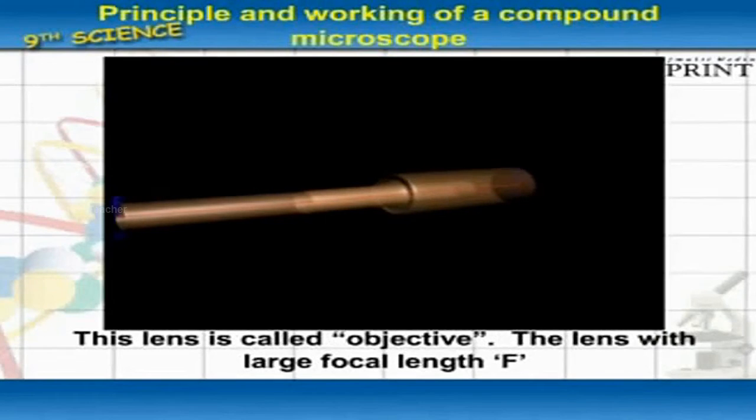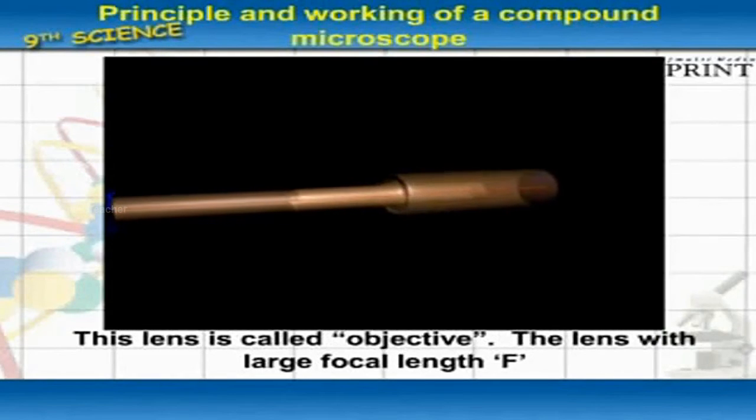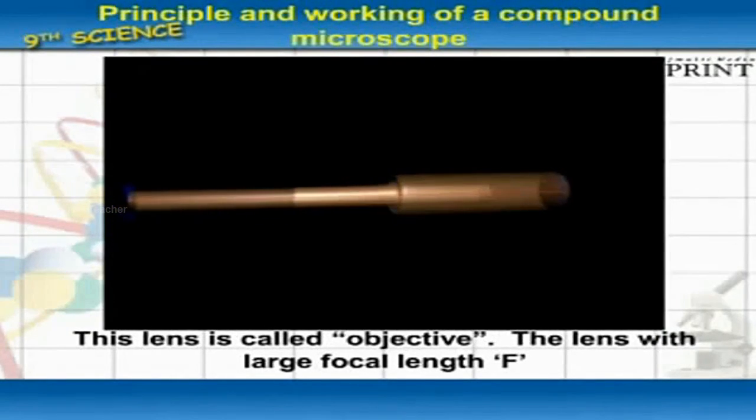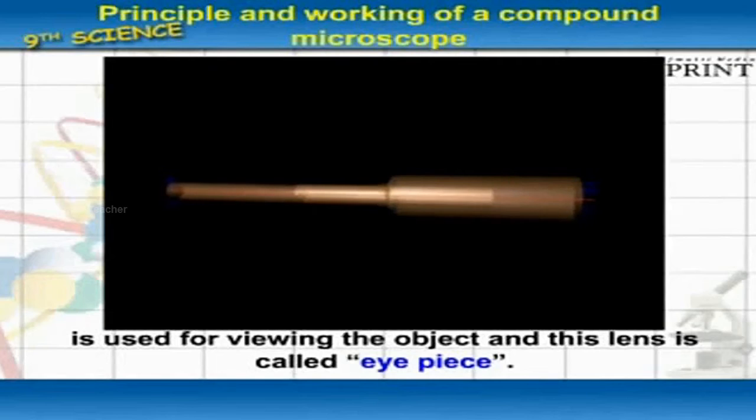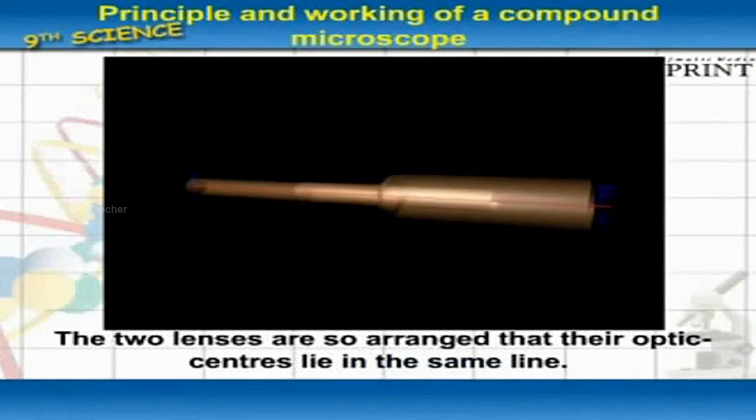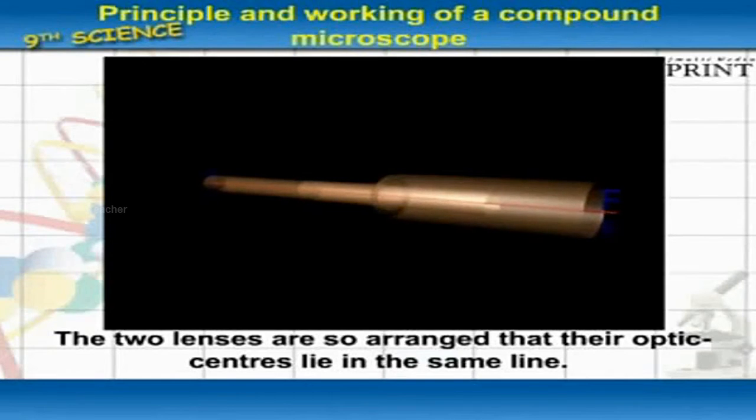This lens is called the objective. The lens with large focal length F is used for viewing the object and this lens is called the eyepiece. The two lenses are so arranged that their optic centers lie in the same line.